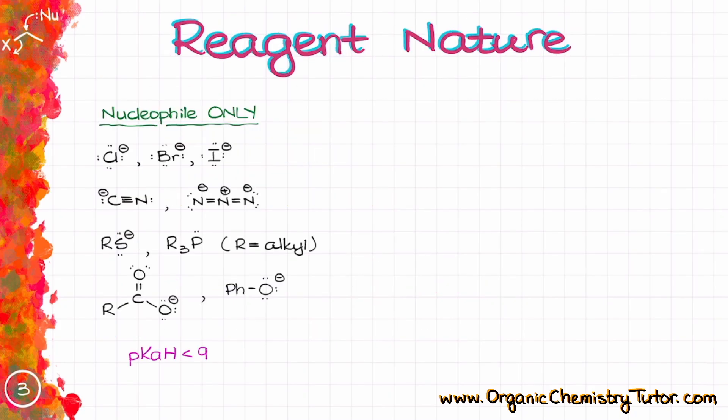First, let's look at the nucleophile only category. Those are typically the ions like halide, cyanide, azide, phosphorus or sulfur containing compounds, carboxylates, etc. Typically, nucleophile only compounds are the species that have a relatively low pKa of the conjugate acids. I suggest you keep the rough pKaH cutoff at around 9 or so. So anything with a conjugate acid stronger than that is not very basic and is unlikely to pull off a proton from a non-acidic compound.